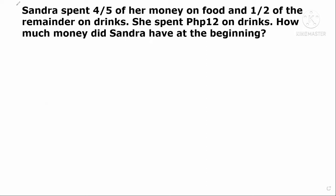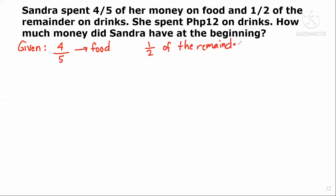So we identify the given: four-fifths of Sandra's money was spent on food, then one half of the remainder was spent on drinks. The question is: how much money did Sandra have at the beginning — magkano ang money ni Sandra before she spent anything?